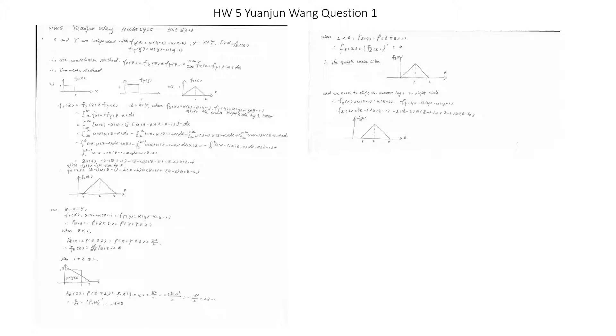For the second part, it asks us to use the geometric method. When z = x+y, fx(x) = u(x) - u(x-1), and fy(y) = u(y) - u(y-1).